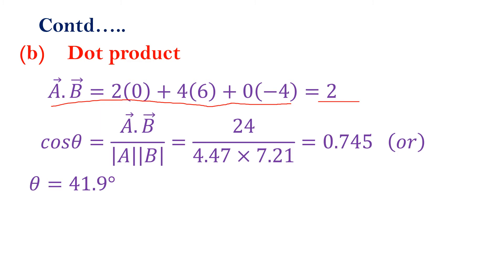Next, find cos theta. Cos theta equals A dot B divided by the magnitude of A times the magnitude of B, which is 24 divided by 4.47 times 7.21, giving 0.745. So theta equals cos inverse of 0.745, which is 41.9 degrees. Both methods give the same answer.